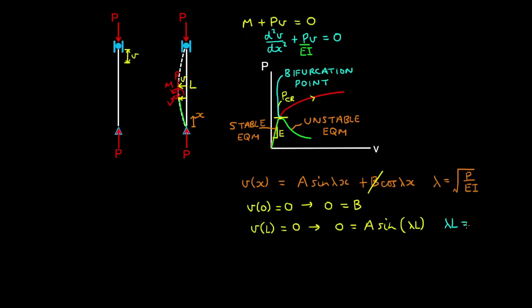For this equation to be satisfied, lambda L must be a multiple of pi. If we square this equation and substitute for lambda squared, which is P on EI, dividing through by L squared, we have n squared pi squared on L squared, and then we multiply through by EI, which gives P is n squared pi squared by EI on L squared.